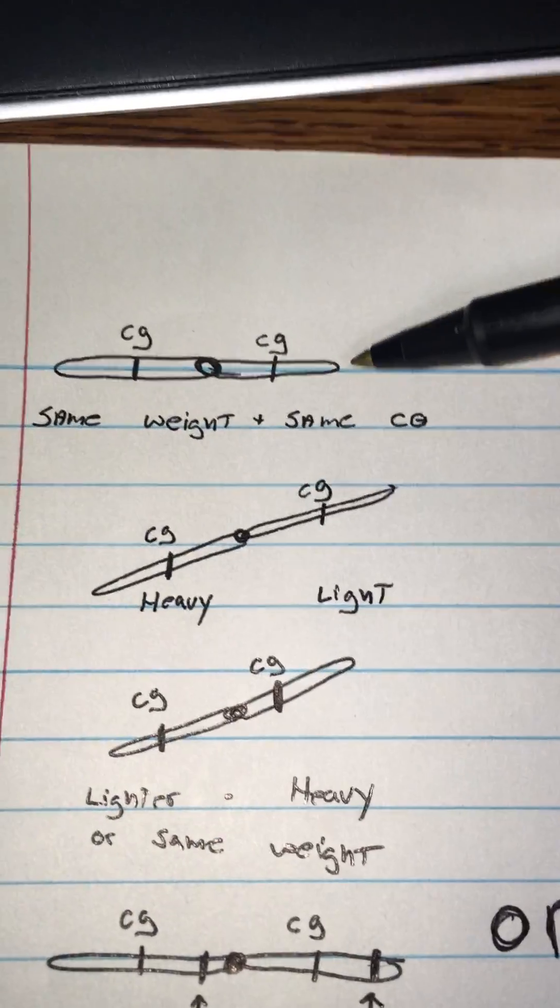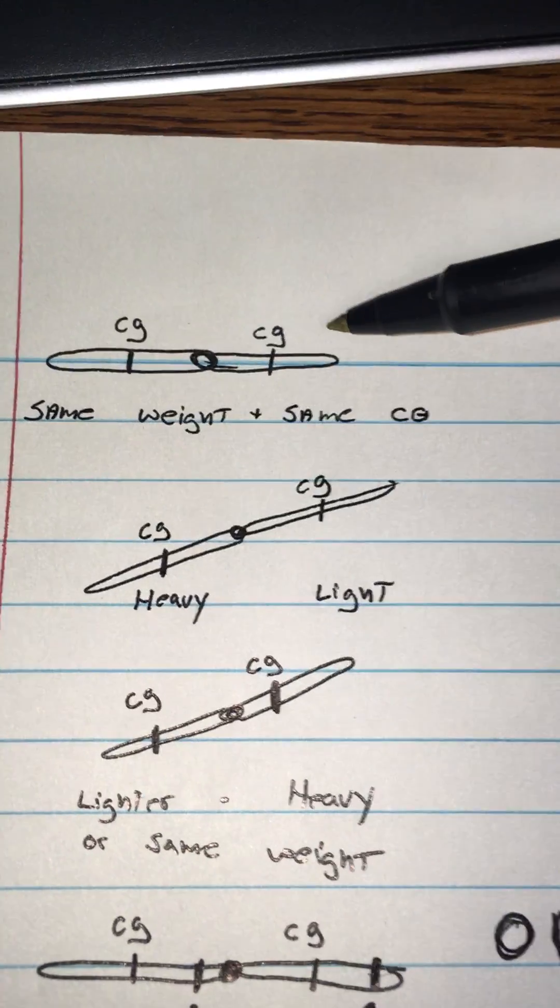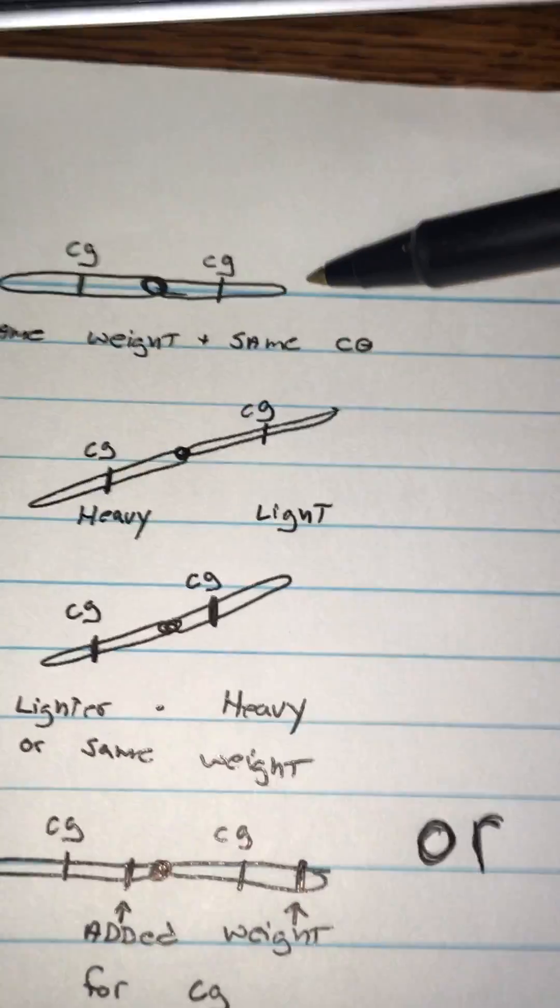If the blades are the same weight and have the same center of gravity, then everything's going to be equal and everything's going to balance out.